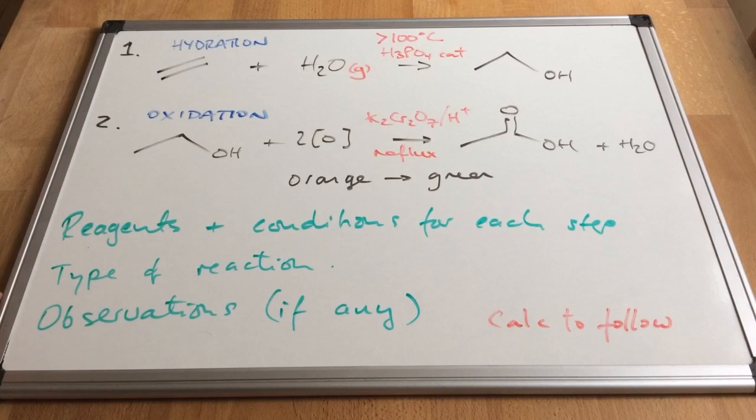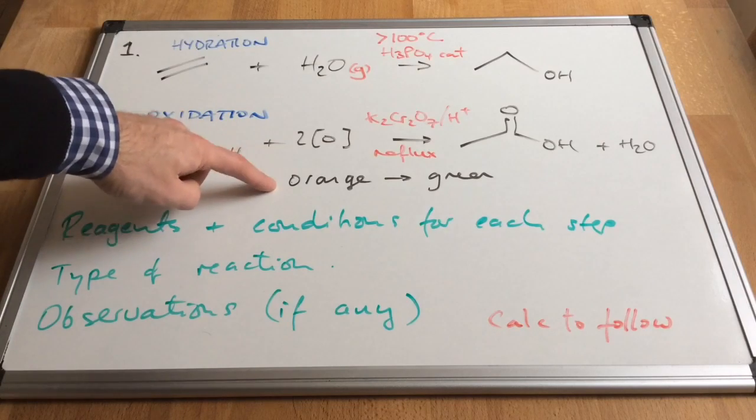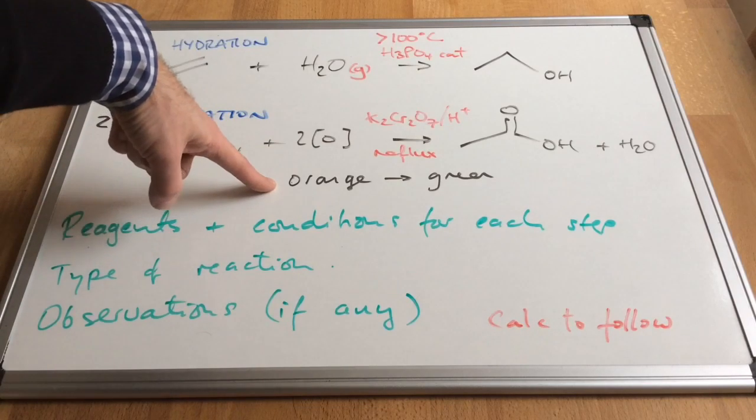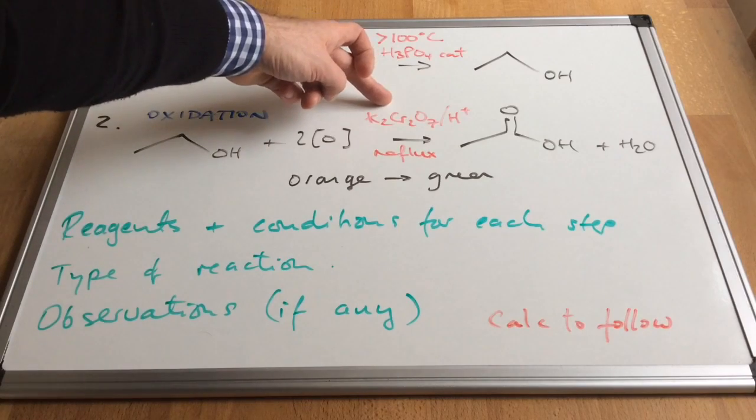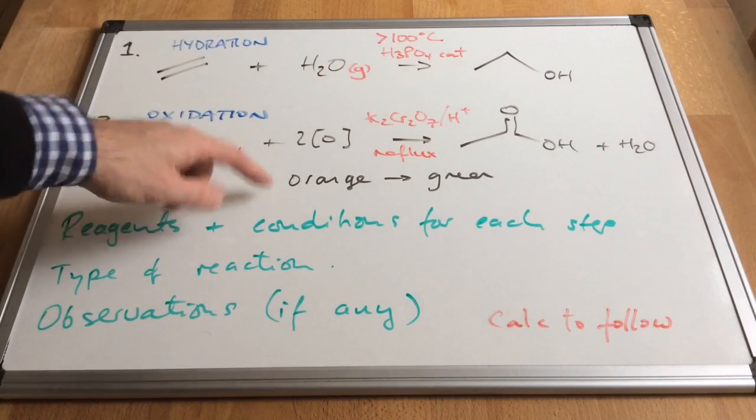And colour changes or observations. Only one, and that's in step two. Orange to green. Remember, this chemical is orange. When it reacts, it goes green.